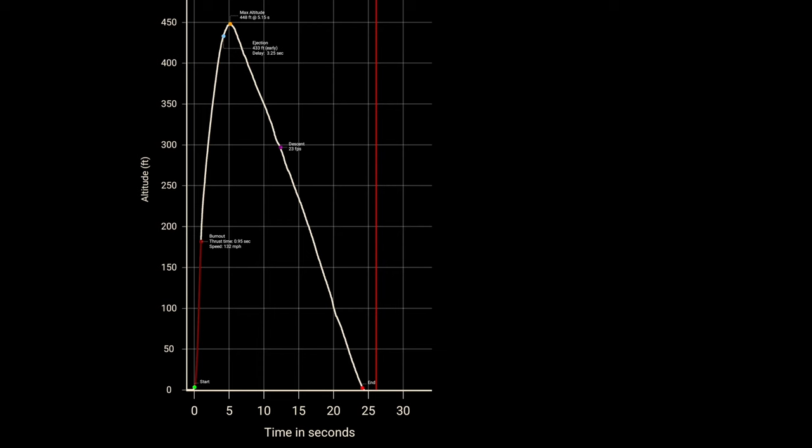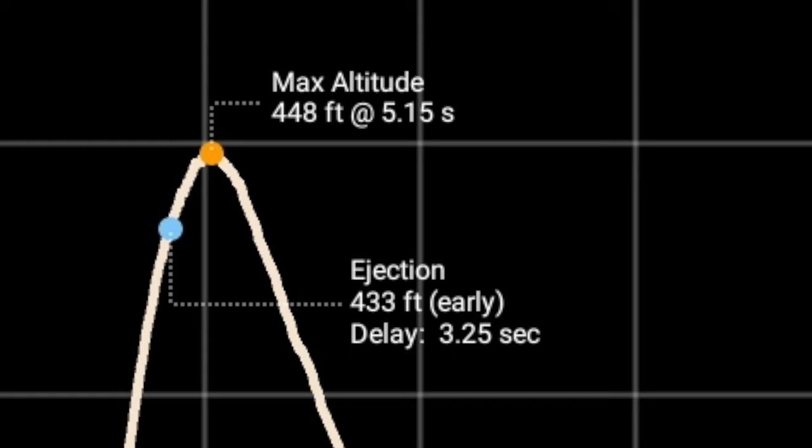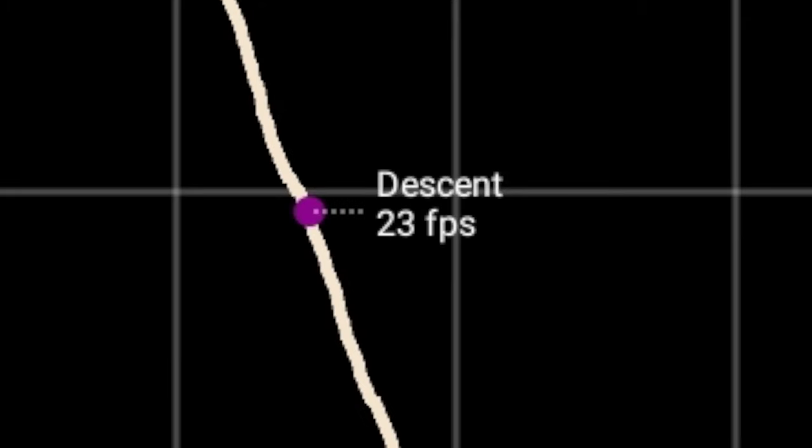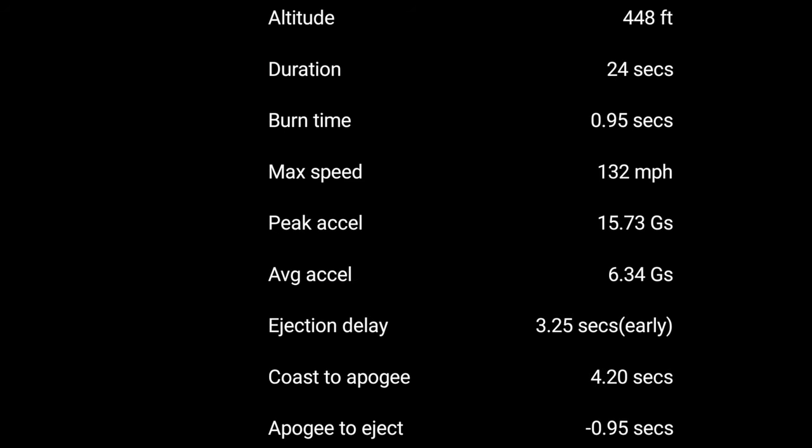Okay, let's check out the data. Speed was 132 miles per hour. Max altitude 448 feet. The descent 23 feet per second. There's a list of parametric data.